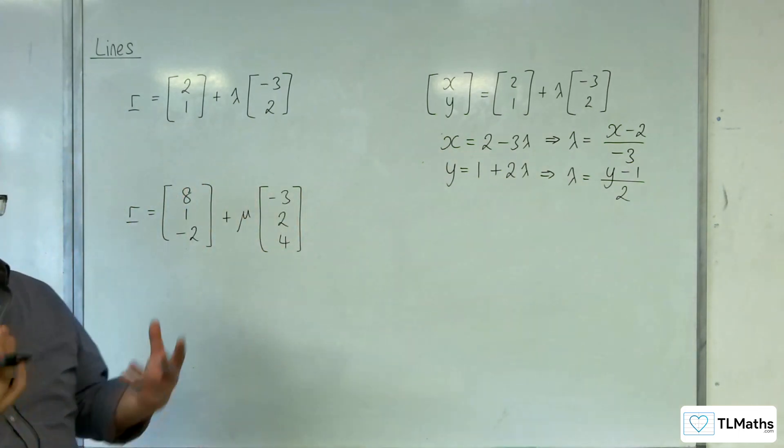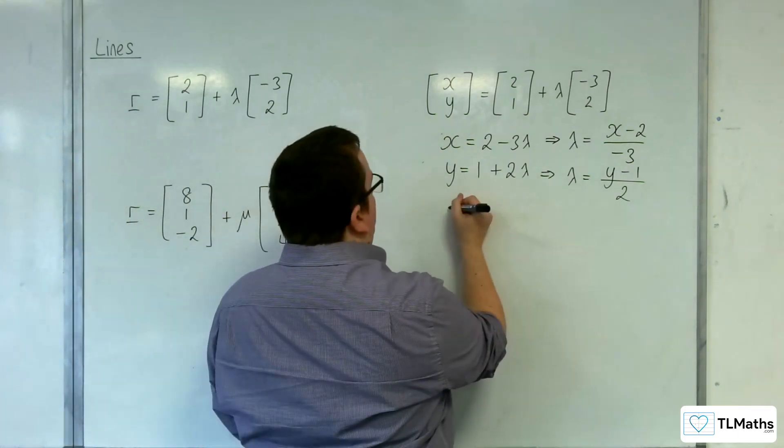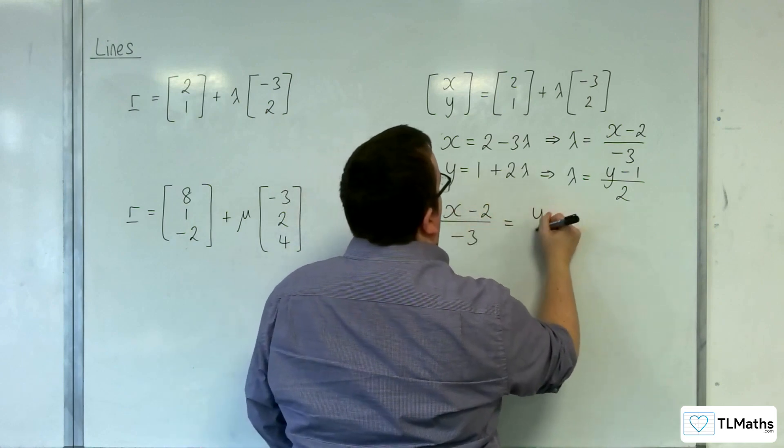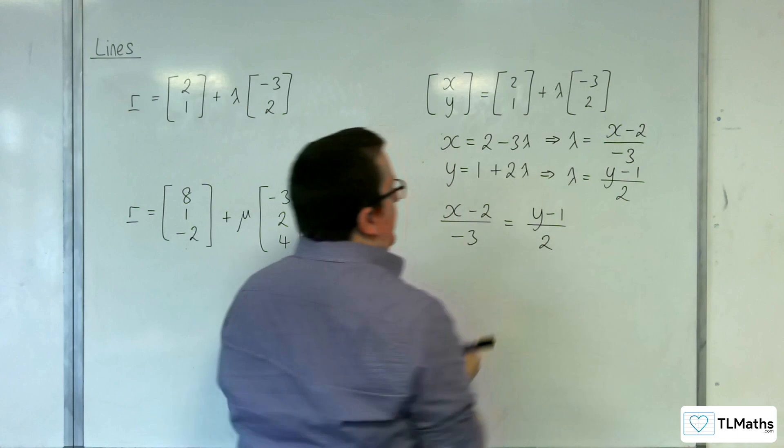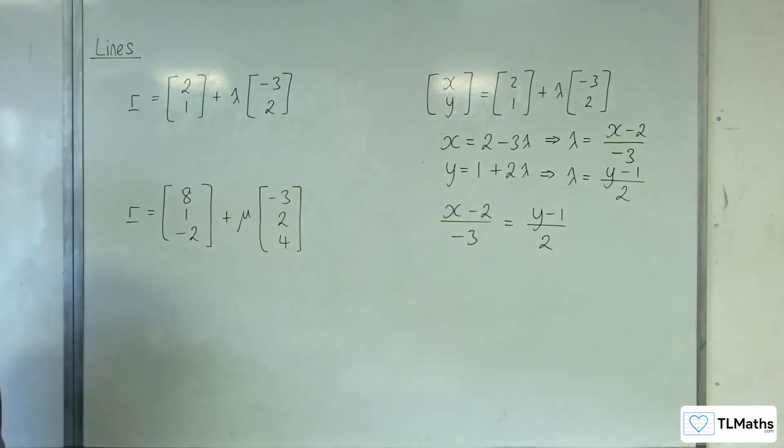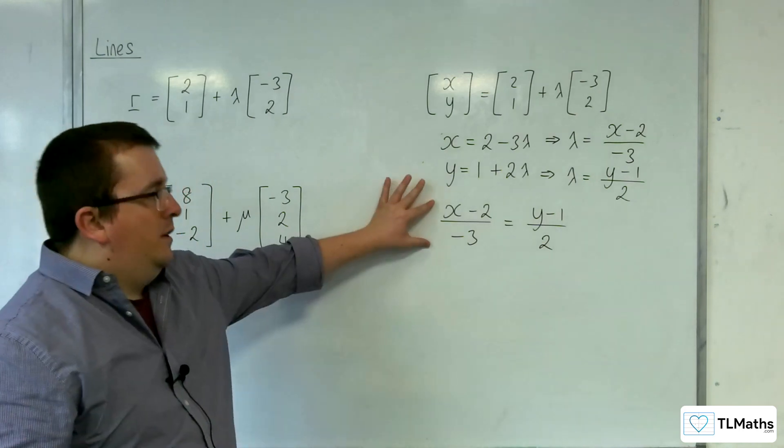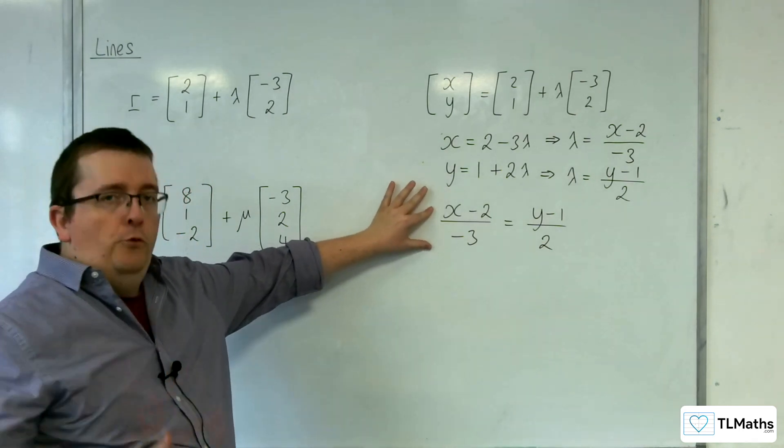So, the lambdas have to be equal to one another. So, x take away 2 over minus 3 must be equal to y minus 1 over 2. So, this is effectively the Cartesian equation for the line.